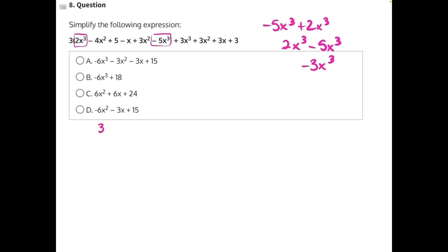So we can start to rewrite our expression: 3 times negative 3x cubed. The next set of like terms we could combine are negative 4x squared and positive 3x squared. Again, you can flip these to look like a subtraction problem if that is helpful. Either way, you're going to get negative 1x squared, or just negative x squared. So we can add that.